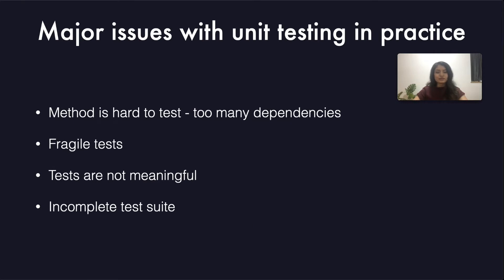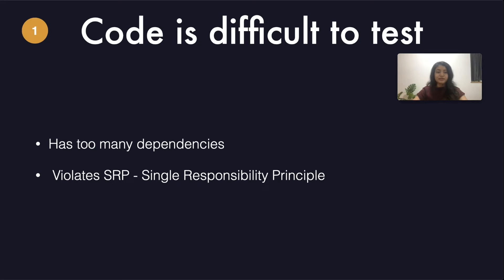These are some of the issues that we are going to talk about today. Let's go through them one by one. In my experience, this is one of the first blockers that comes up: difficulty to write tests for a piece of code. The code could be in a POC stage or part of some legacy codebase. It's almost always a red flag when a piece of code is hard to test — it either has too many dependencies or violates the single responsibility principle.